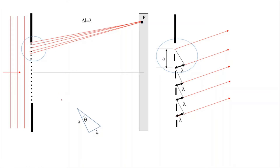Then what is tangent of angle theta? Tangent theta is going to be equal to sine theta, because we are using small angle approximation. We know that tangent theta equals lambda over a, and from here we can write lambda equals a sine theta. So the path difference delta-l equals a sine theta.